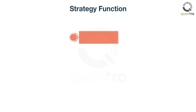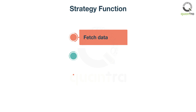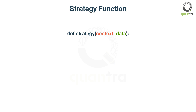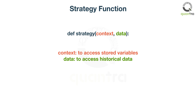The next step is to create a strategy function. In this function, we fetch the data for all currency pairs, calculate returns, and then place orders to buy the top three and sell the bottom three currency pairs. The function takes two parameters: context and data. The context is used to access variables stored in it, and data is used to access the historical data.